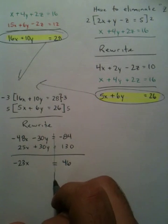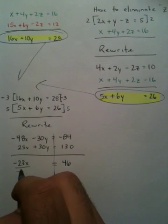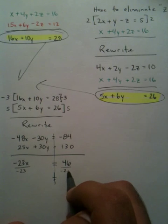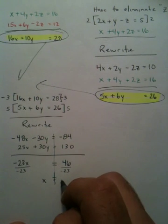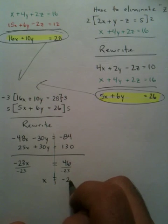And then you solve for x. You say, alright, divide by negative 23, divide by negative 23, that's the inverse. Therefore x is going to equal negative 2.